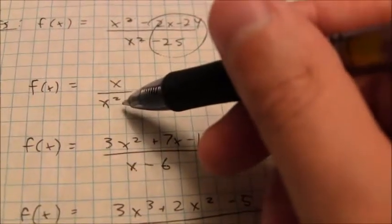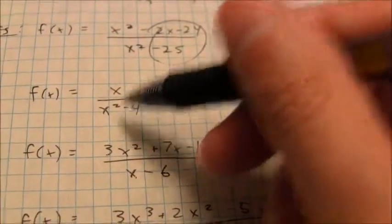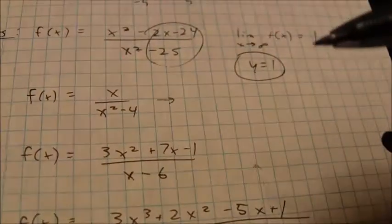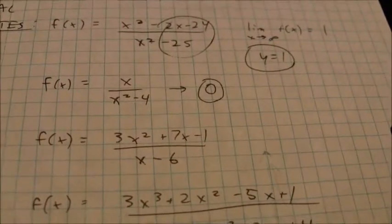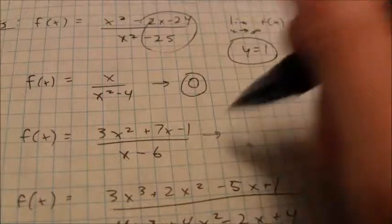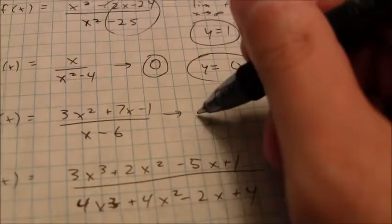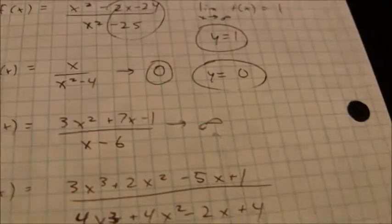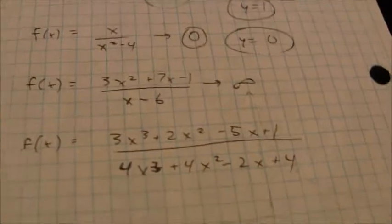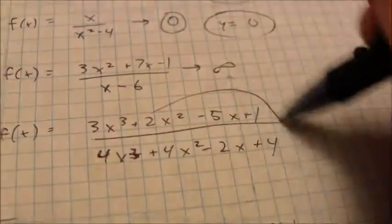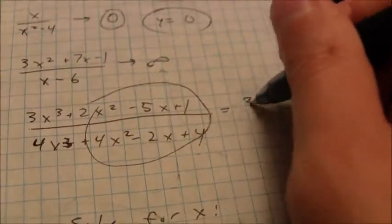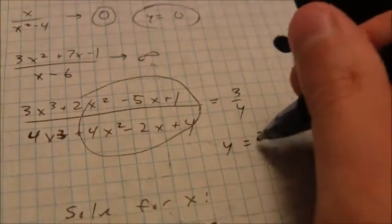When the denominator has a higher power, it increases much faster, so the denominator goes to infinity first, giving you a value of zero — so that horizontal asymptote is y equals zero. When the numerator's power is higher, you get a limit of infinity, meaning the graph doesn't approach any set value. On the last one, the highest powers are both x to the third, so the limit approaches three-fourths, giving a horizontal asymptote of y equals three-fourths.